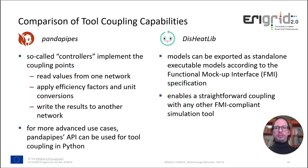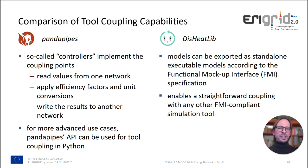They also differ in the way you do tool coupling for co-simulation. PandaPipes implements controllers that implement coupling points: they can read values from one network, apply efficiency factors and unit conversions, and write results to another network. For more advanced use cases, you can use the PandaPipes API for tool coupling directly in Python. The DC Clip, being a Modelica package, allows you to export models as standalone executables according to the functional mockup interface specification, enabling straightforward coupling with any other FMI-compliant simulation tool.